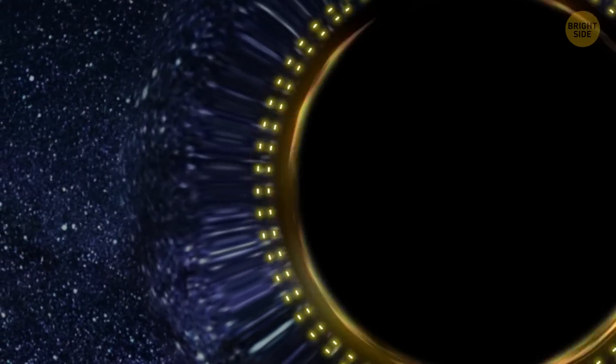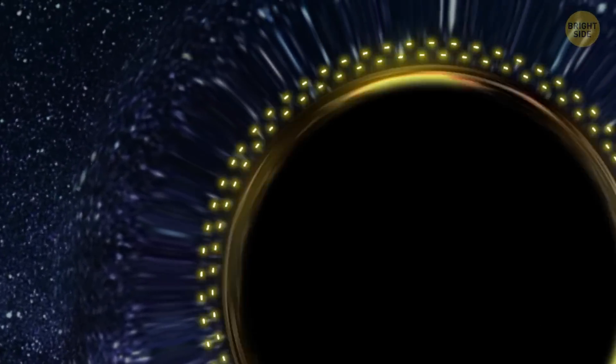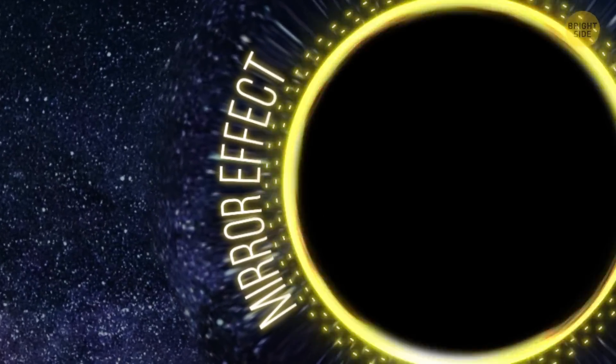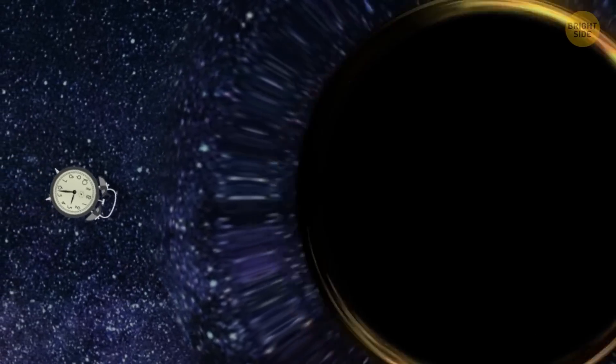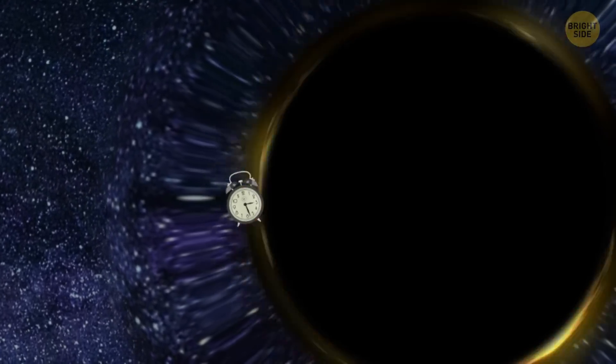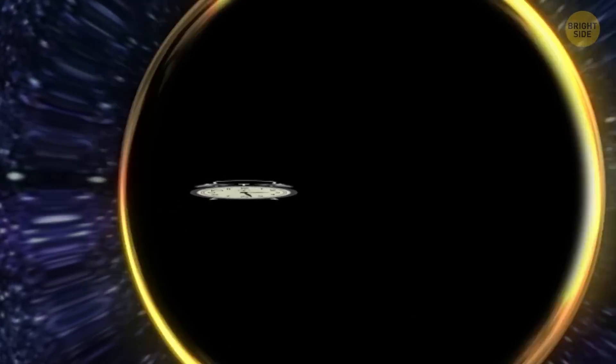You may also notice a kind of chaos in this ring, as if some light particles are moving in one direction and others in another. This happens because of a mirror effect. But you can be sure that whatever reaches the event horizon will, sooner or later, be pulled into the singularity, or the black pearl, of the black hole.